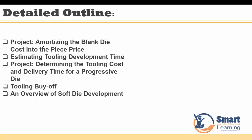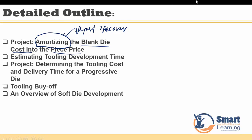We'll be starting primarily by amortizing the blank die cost into the piece price. This amortizing is essentially how to adjust or recover your typical tooling price into your piece price. We'll also be estimating the tooling development time — what the complete development time is and the expenses you are incurring.